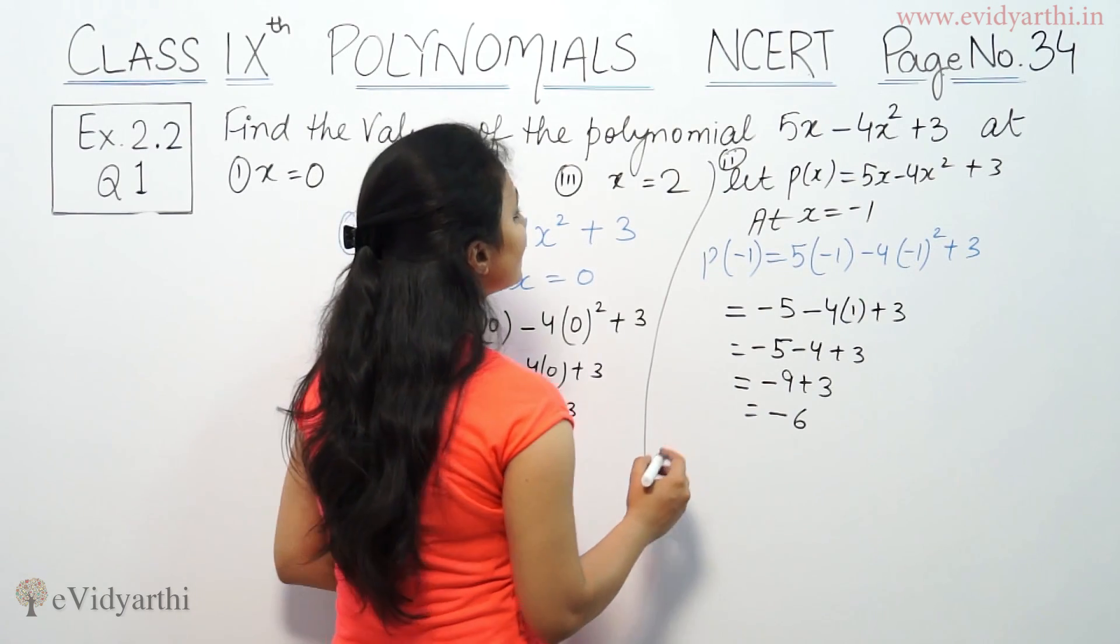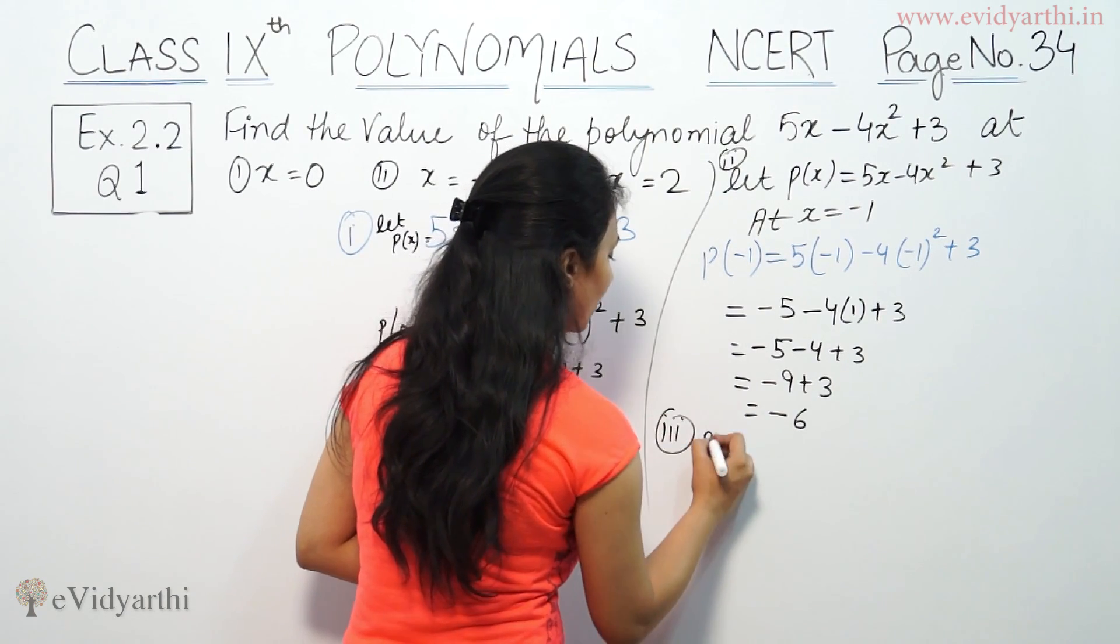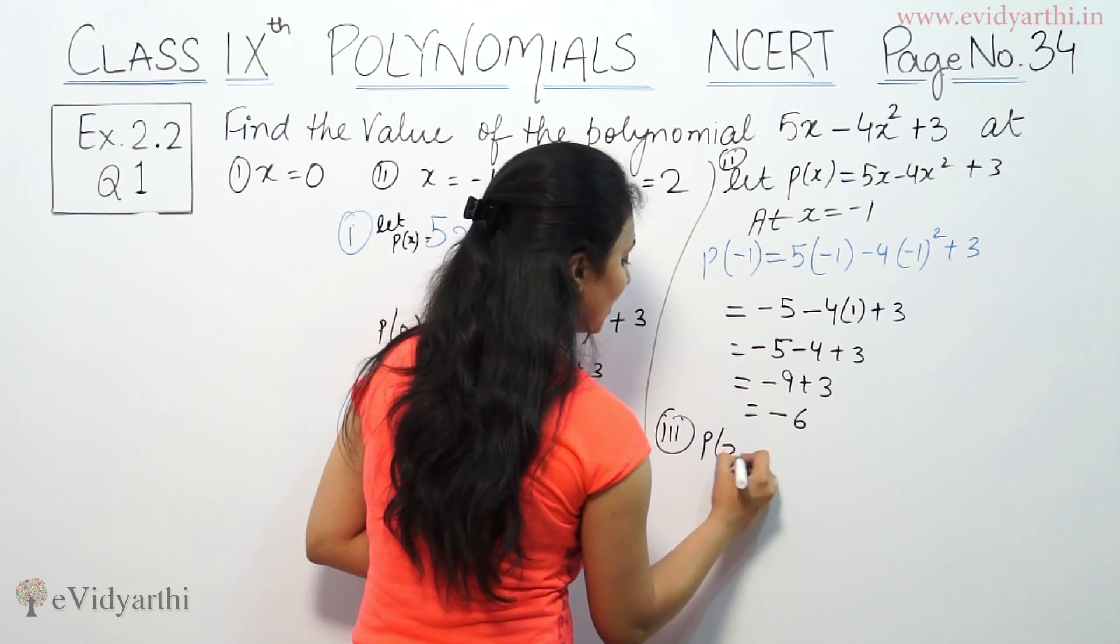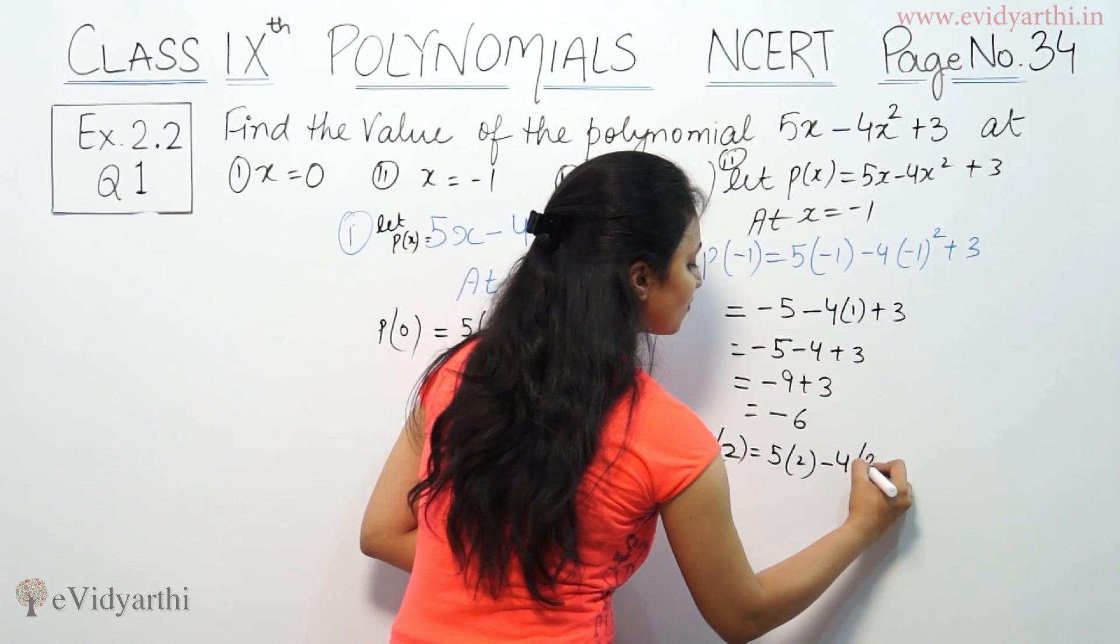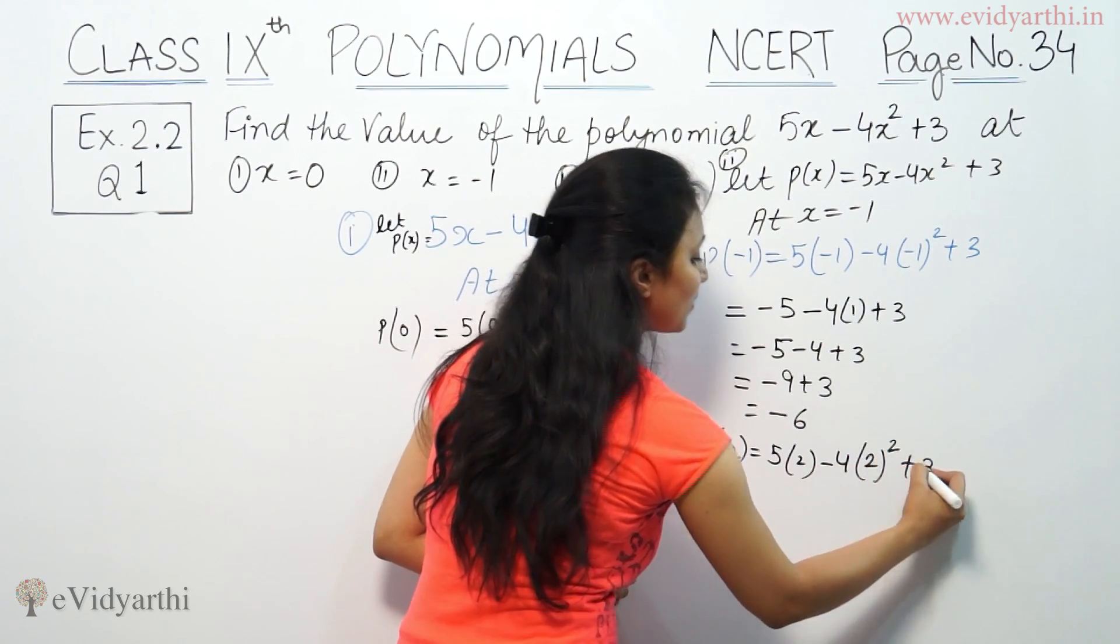Same way for the third part, we will find the value at x equals 2. So p(2) equals 5 times 2 minus 4 times 2 squared plus 3.